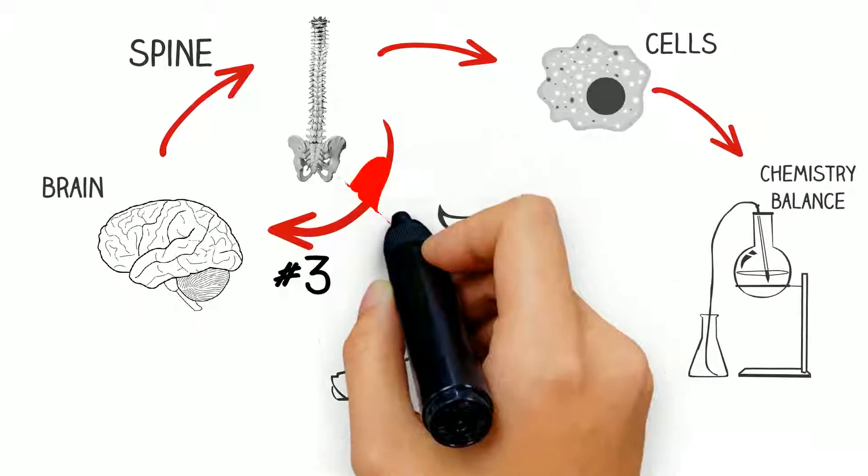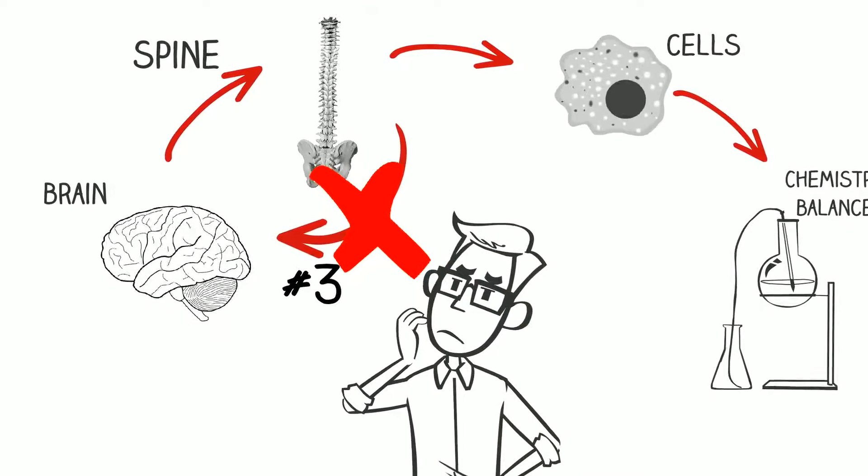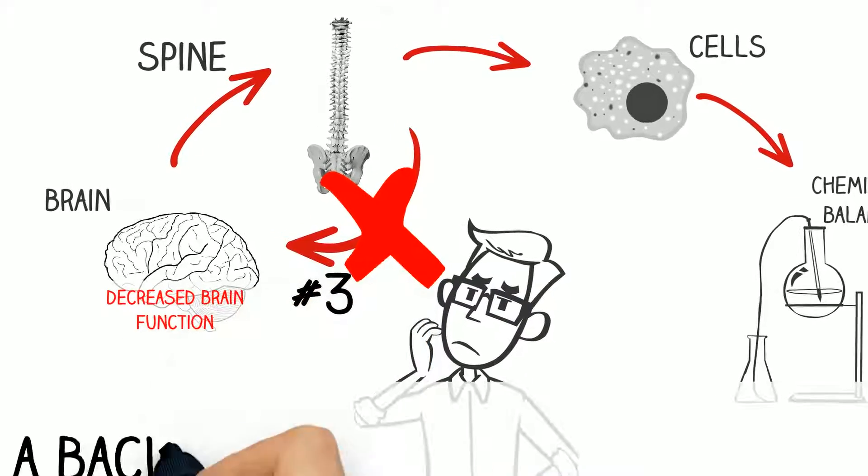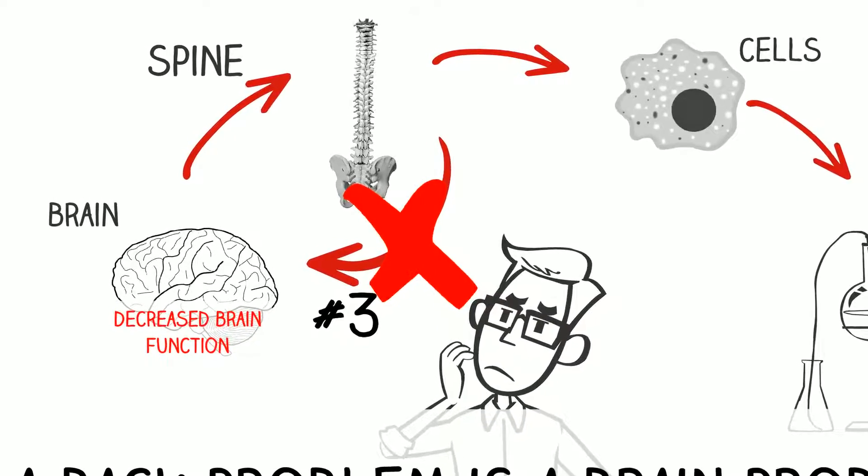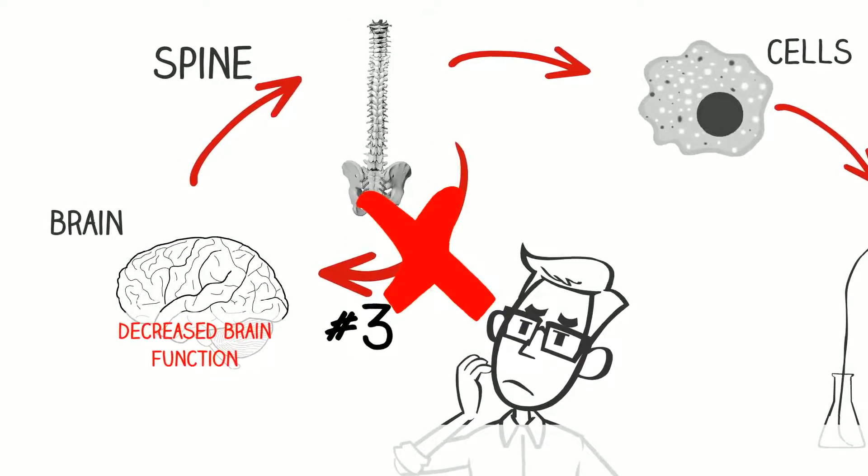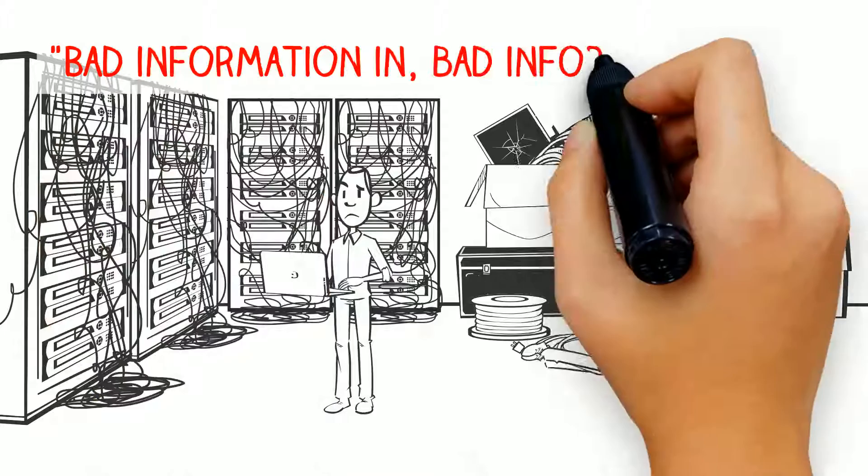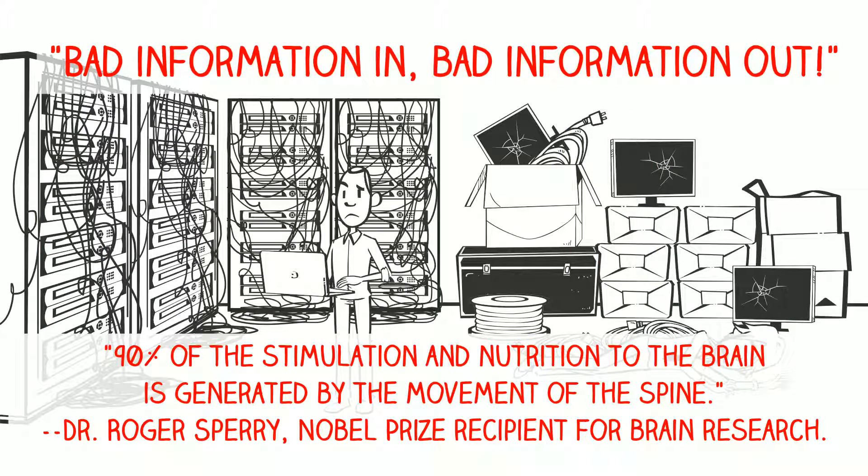Last of all, if a subluxation blocks the return messages or feedback from the body back to the brain, the brain function declines. Just like a mainframe computer, this lack of feedback causes the brain to shut down.